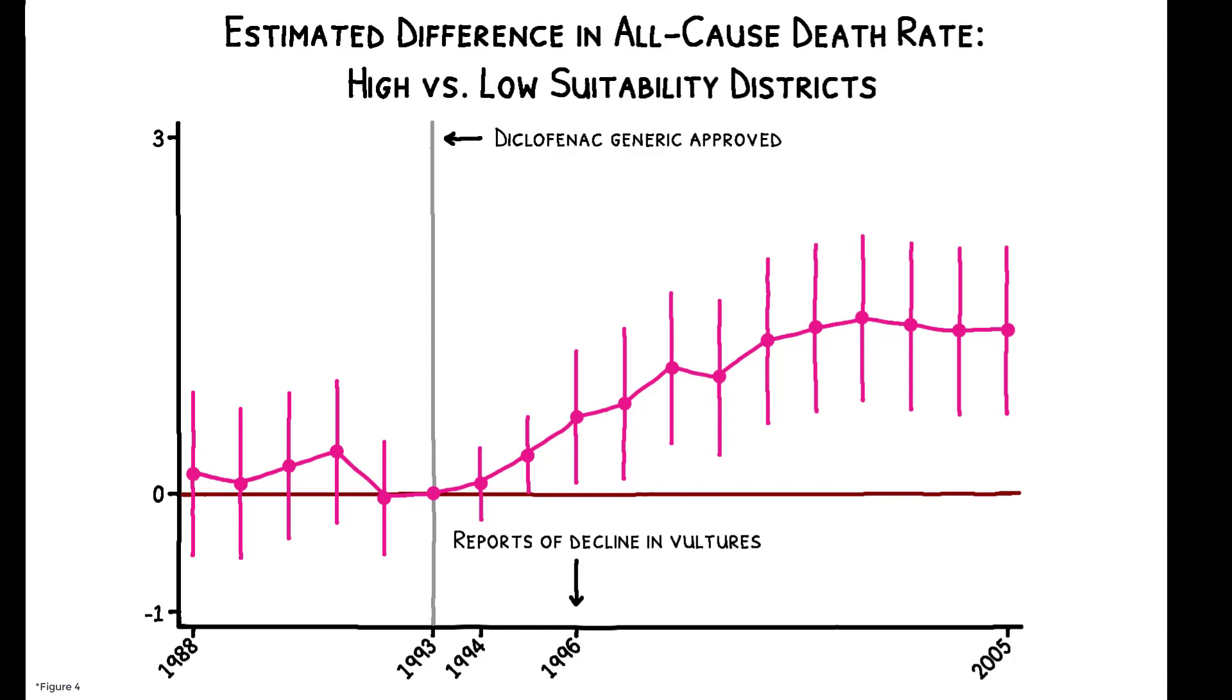Districts that were highly suitable for vultures saw an average increase in all-cause human death rates of 4.2% in the years following their population collapse. This implies an average of over 104,000 additional deaths each year relative to a population of 430 million, or mortality damages of around $69 billion per year.